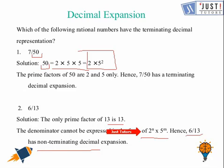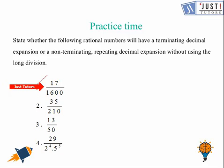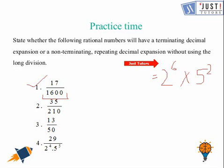Now let us move to a practice question. State whether the following rational numbers will have a terminating or non-terminating repeating decimal expansion without using long division. For number 1, 17 over 1600 — it is in simplified form. Factorizing the denominator gives 2 raised to the power 6 times 5 raised to the power 2. Since we got the form 2 raised to the power n times 5 raised to the power m, this is terminating.